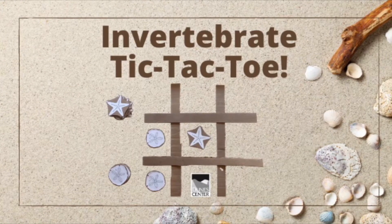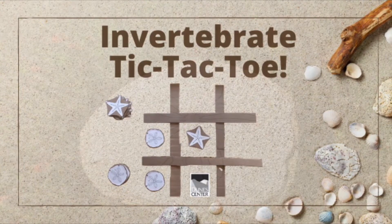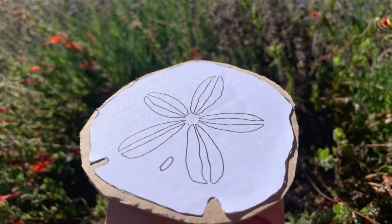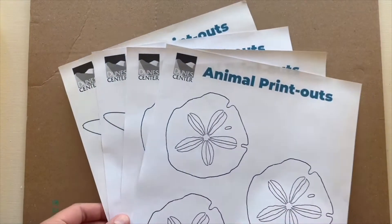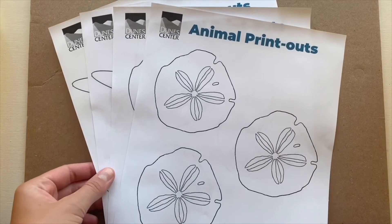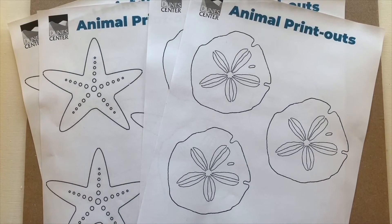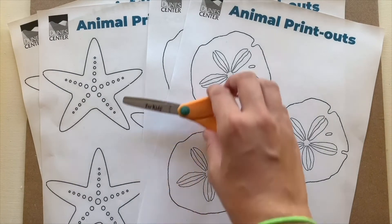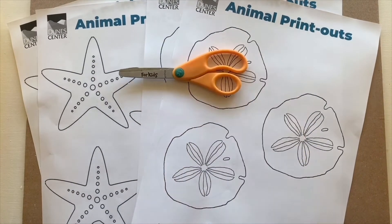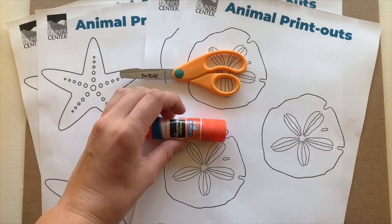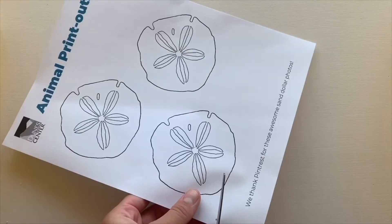After watching this video you will know how to make a large reusable tic-tac-toe game set that you can decorate and personalize. You will only need four materials: cardboard, sand dollar and sea star cutouts which can be found on the sand dollar tic-tac-toe worksheet on our website, scissors, and glue. Now we can begin.